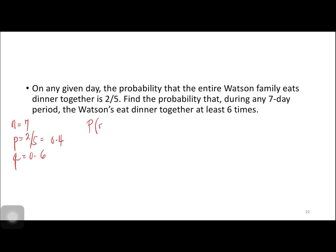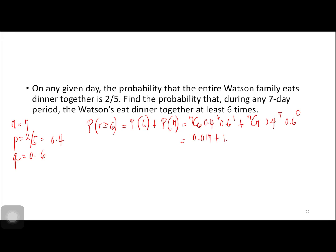We need to compute the probability of r greater than or equal to 6, and that is probability of 6 plus probability of 7, which is equal to 7C6 times 0.4 raised to 6 times 0.6 raised to 1, plus 7C7 times 0.4 raised to 7 times 0.6 raised to 0. We have 0.017 plus 1.638 times 10 to the negative 3, and that is equal to 0.0186.